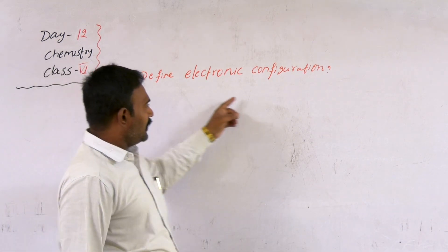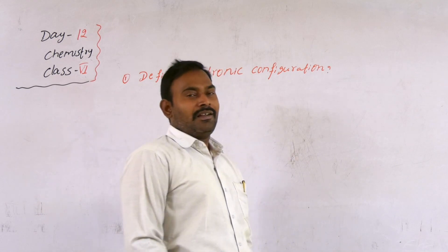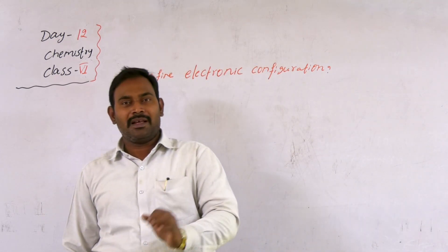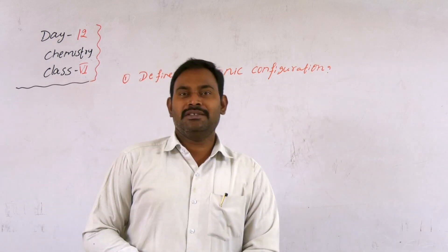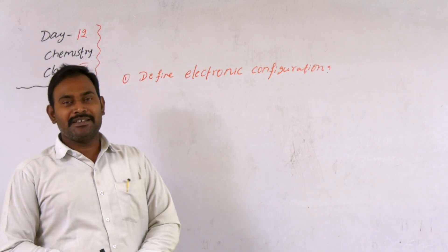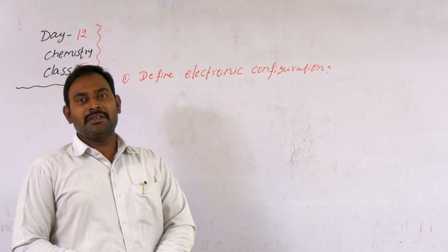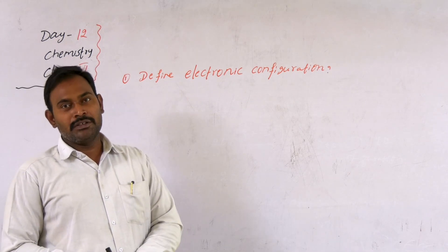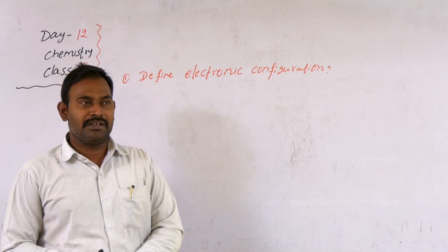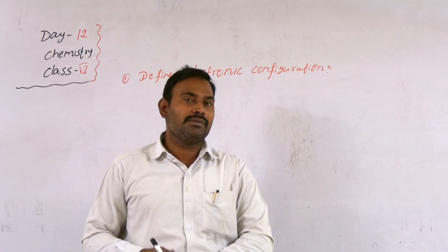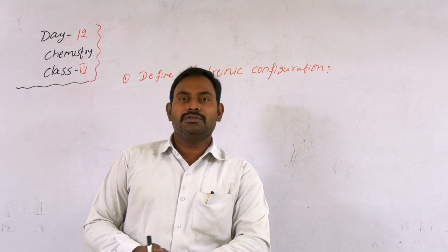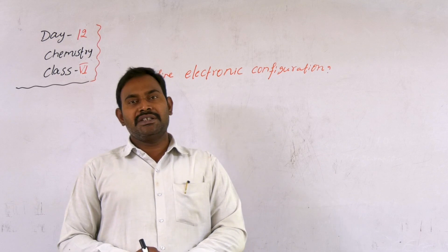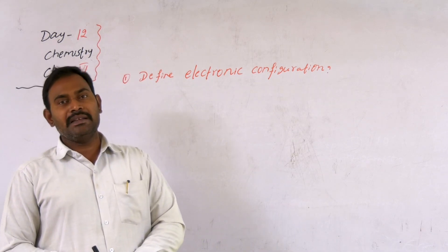The first question is: define electronic configuration. Electronic configuration means each and every atom is made up of protons, electrons, and neutrons. Protons and neutrons are present inside the nucleus of the atom, while electrons are present outside the nucleus. These electrons revolve around the nucleus in a circular path. Those circular paths are called orbits, shells, or energy levels.